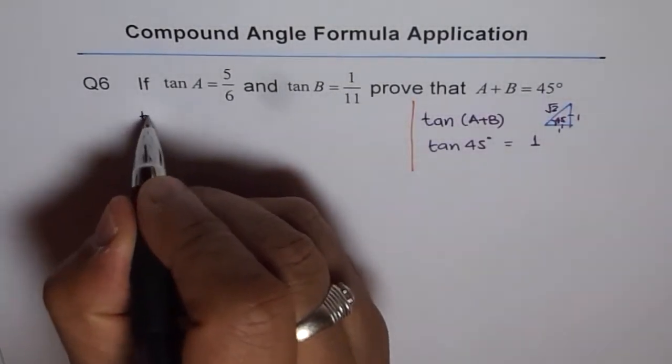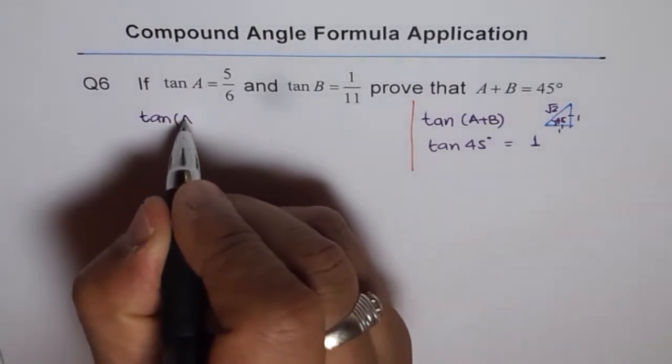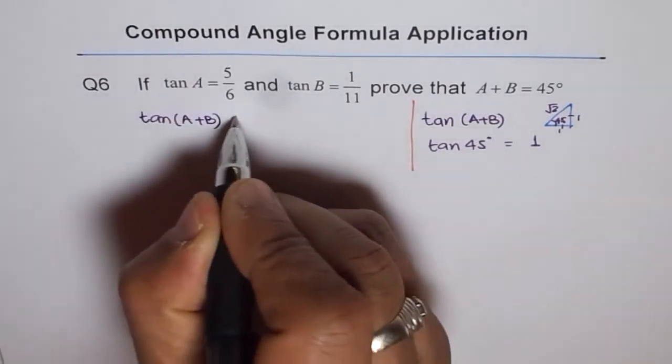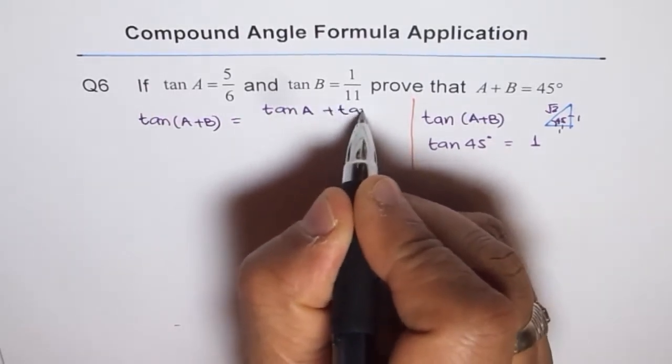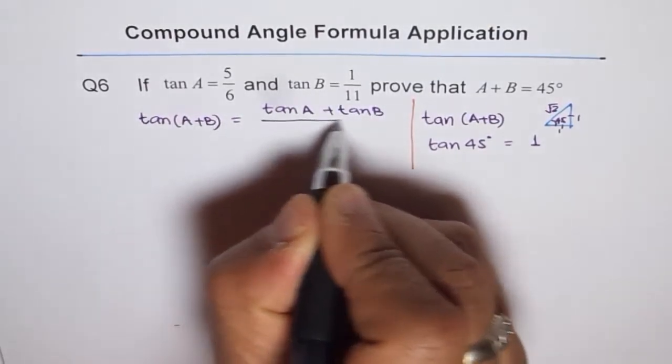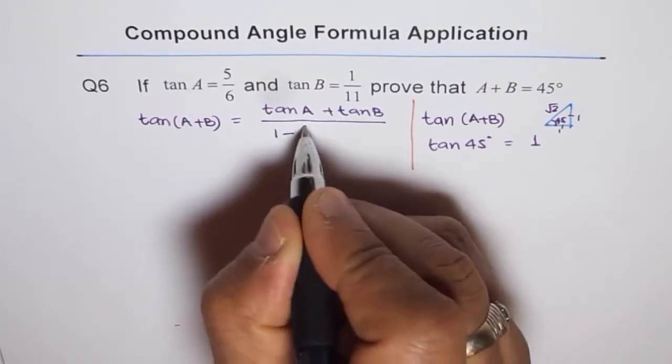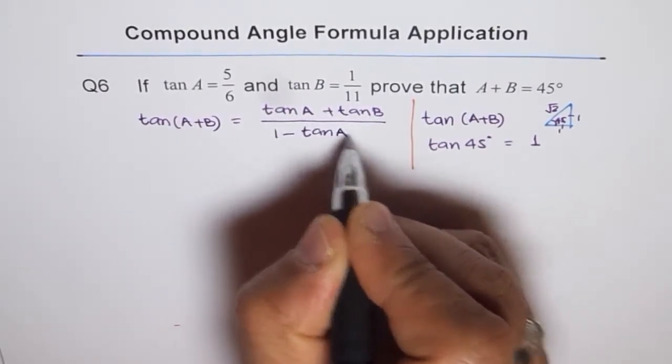So what is tan A plus B? We know tan A plus B can be written as tan A plus tan B divided by 1 minus tan A tan B.